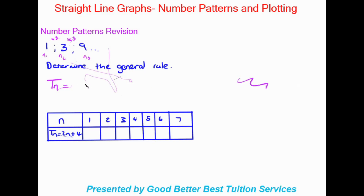So TN is equal to 3 times N — that will end up being our rule. That's all it really takes to determine our rule; we just need to decipher what's happening in the number pattern.